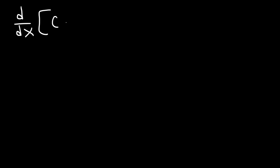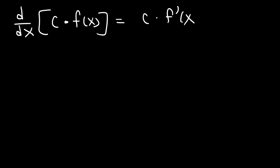In this lesson, we're going to go over the constant multiple rule for derivatives. The derivative of a constant times a function is equal to the constant times the derivative of the function. So all you need to do is find the derivative and multiply it by that constant.